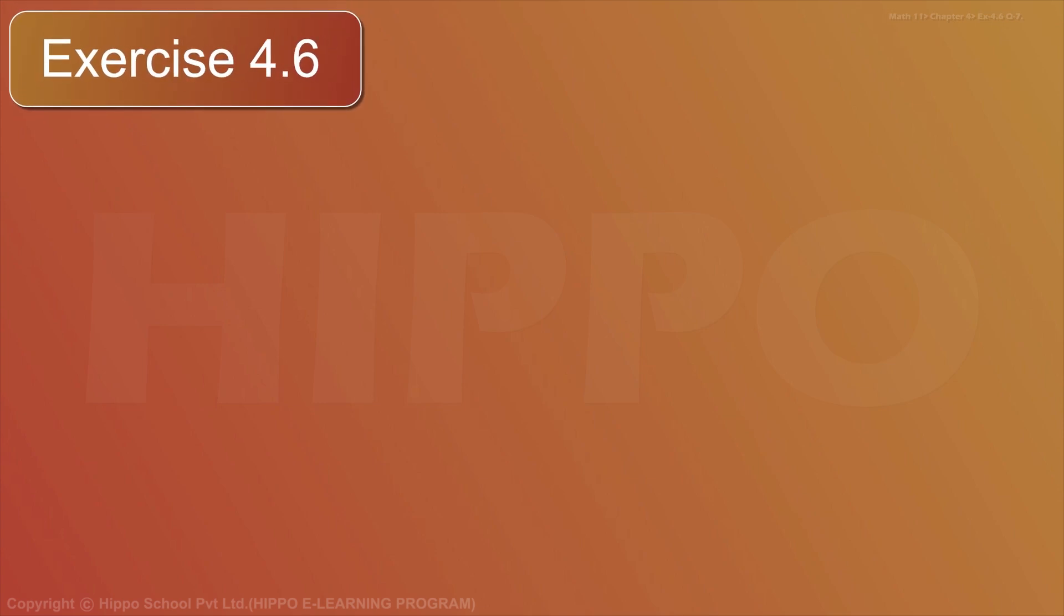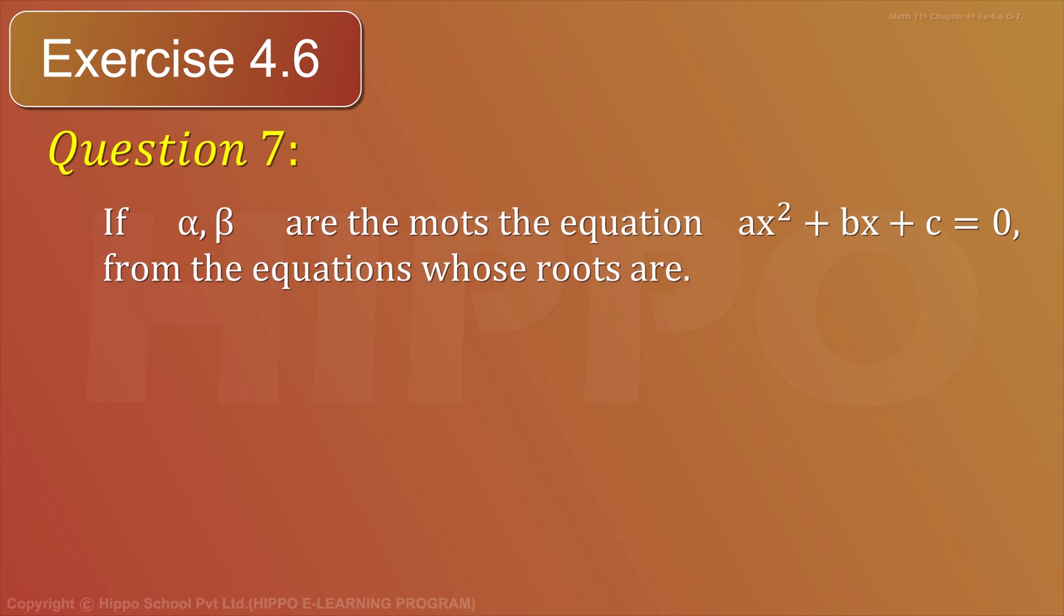Exercise number 4.6, question number 7: If α, β are the roots of the equation ax² + bx + c = 0, form the equation whose roots are α², β². Solution, part 1: α², β².